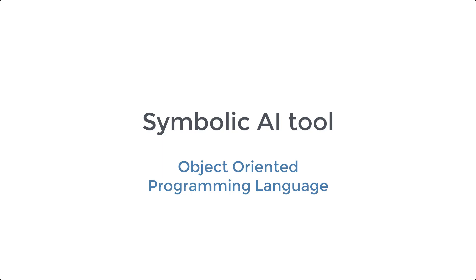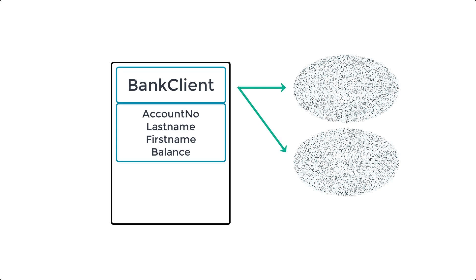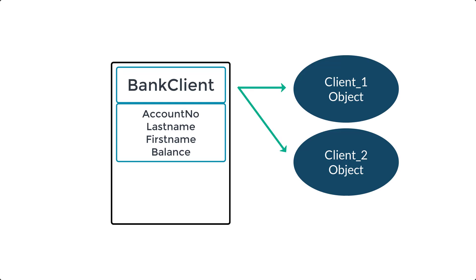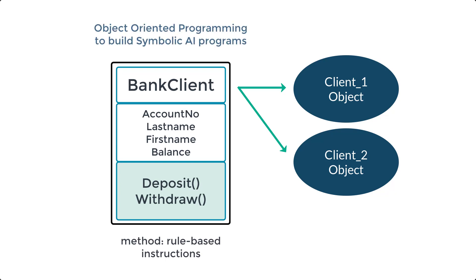OOP languages like C++ and Java allow you to define classes, specify their properties, and organize them in hierarchies. You can create instances of these classes called objects, and they can perform actions through their methods. Each method executes a series of rule-based instructions that might read and change the properties of the current object or other objects. Using OOP, you can create extensive and complex symbolic AI programs that perform various tasks.